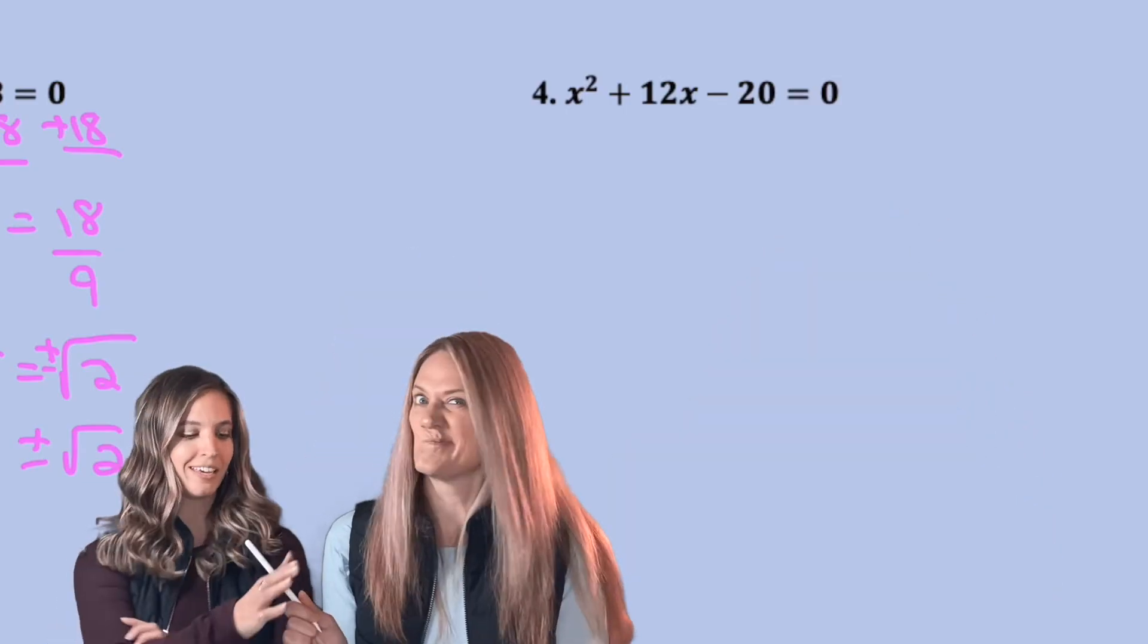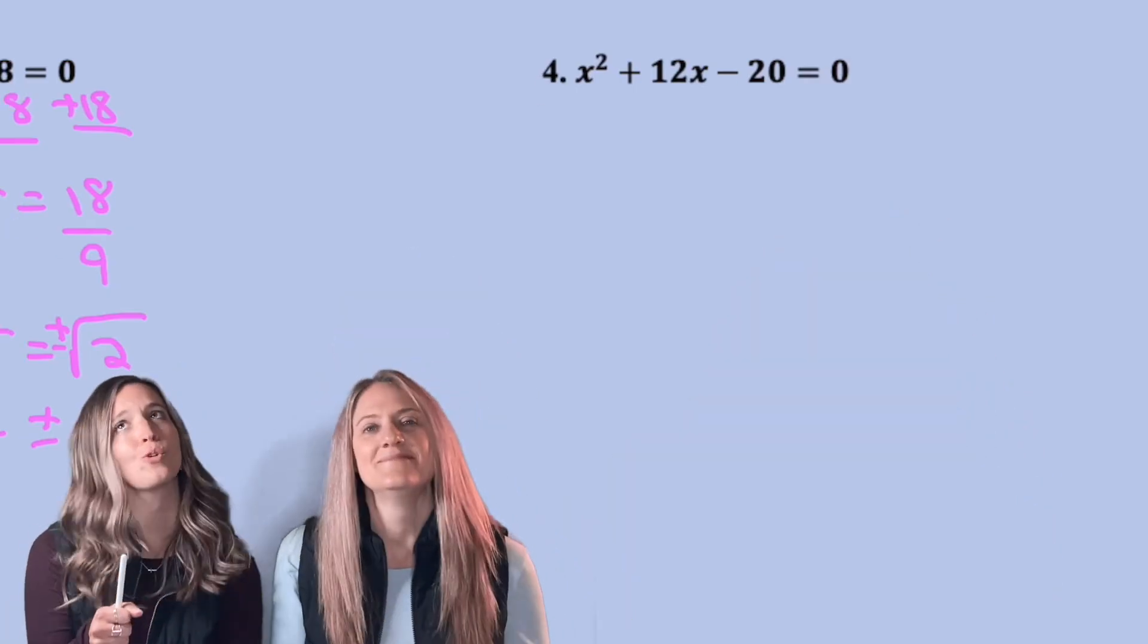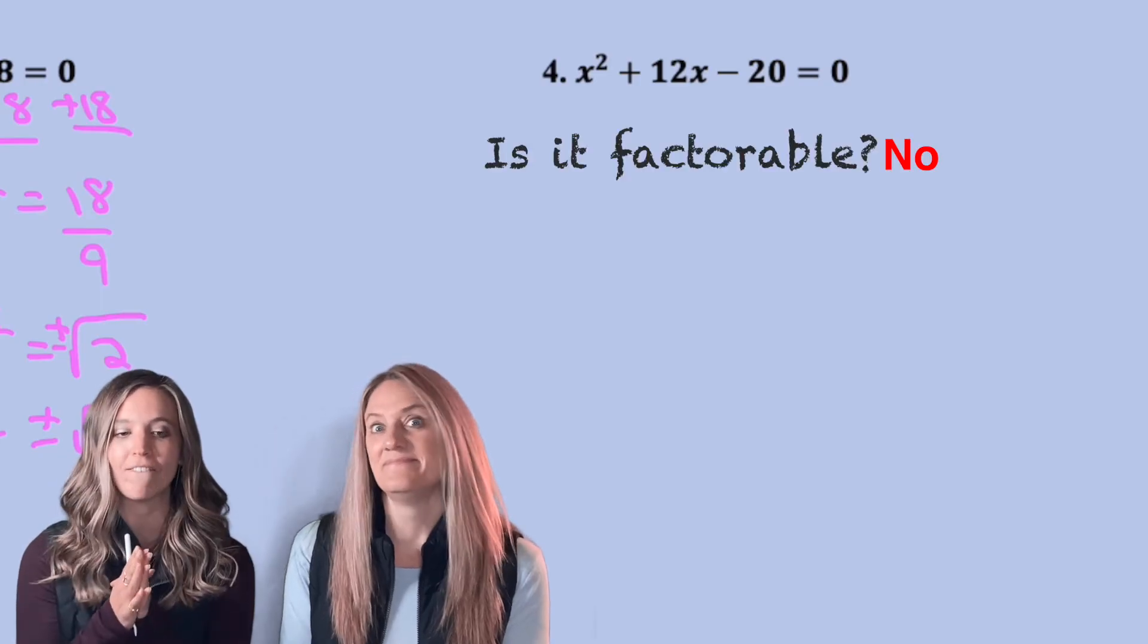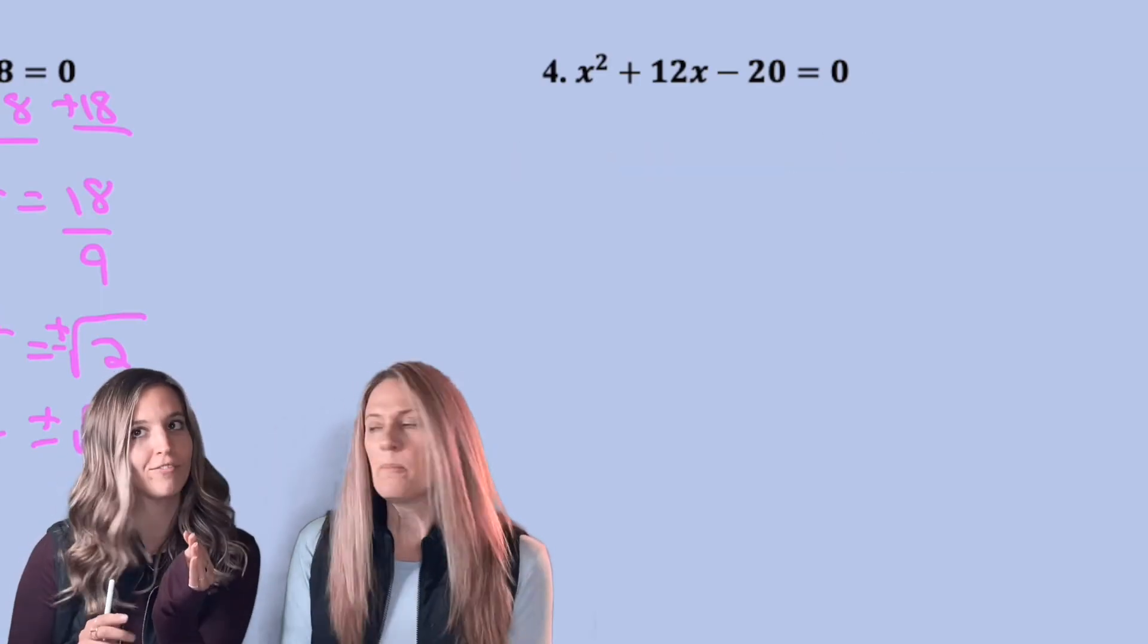All right, this last one, all me. X squared plus 12x minus 20. Ugh, I can't factor it. So, I do have a one for A.